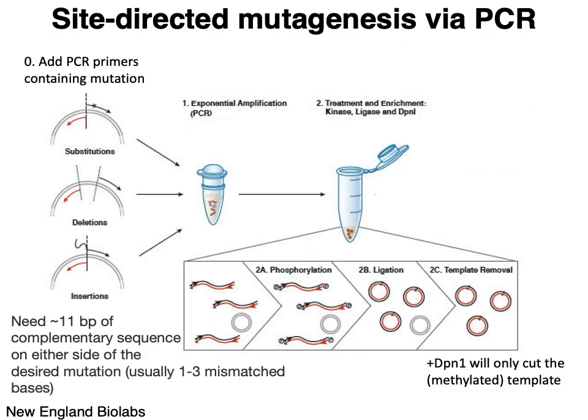One of the first approaches people use to do gene editing is site-directed mutagenesis via PCR. In typical PCR, you're using a pair of primers that either anneal to the ends of a fragment you're trying to amplify, or in the case of a circular plasmid, you're using primers that anneal to the same starting position but run in opposite directions on the plasmid, as shown in step zero.